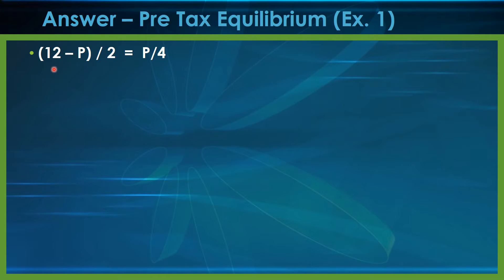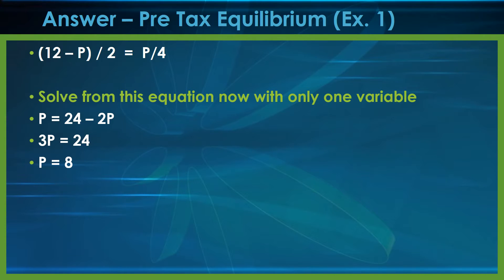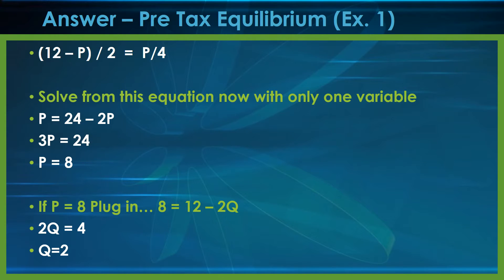With the two equations combined, we solve for equilibrium price and quantity with no tax. Multiplying through by 4, we get P equals 24 minus 2P. Adding 2P to both sides, price equals 8. Plugging 8 back into the original demand equation — 8 equals 12 minus 2Q — we solve for quantity, giving us equilibrium quantity of 2 and equilibrium price of 8.